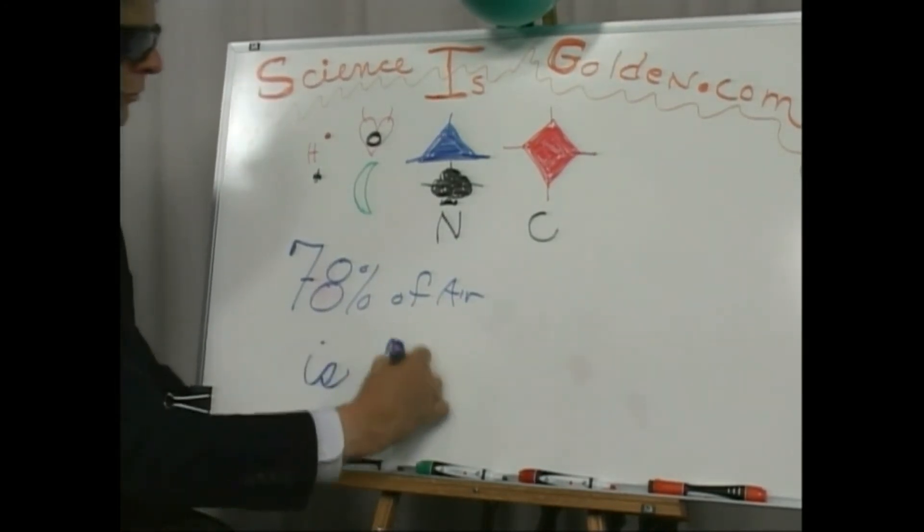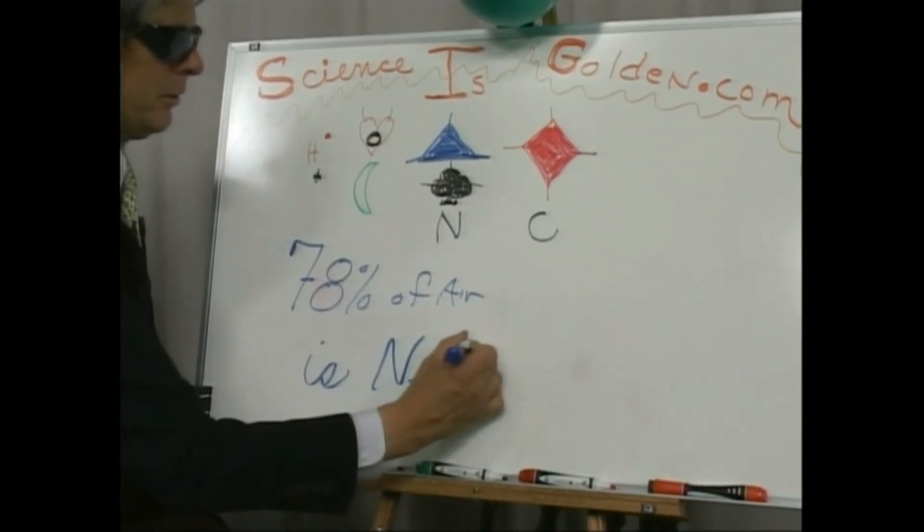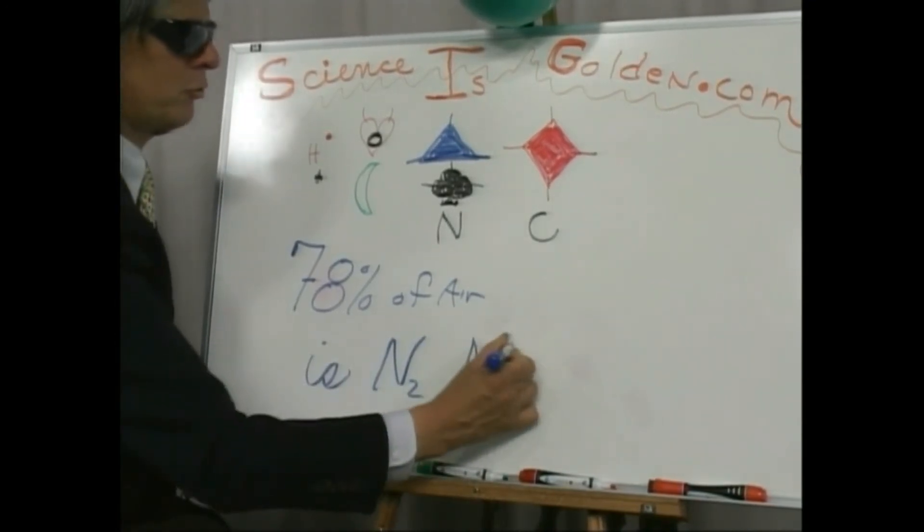And it's two of them, so N2 is an N triple bond N.